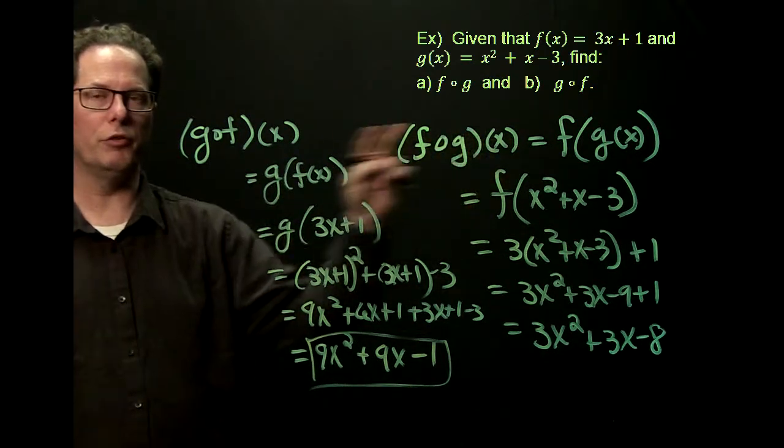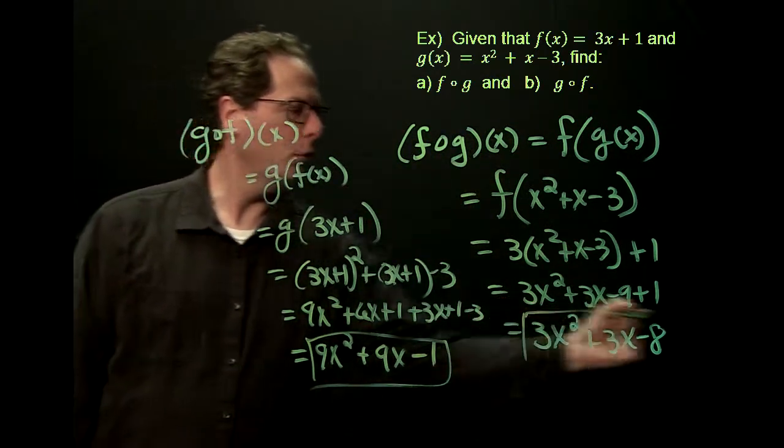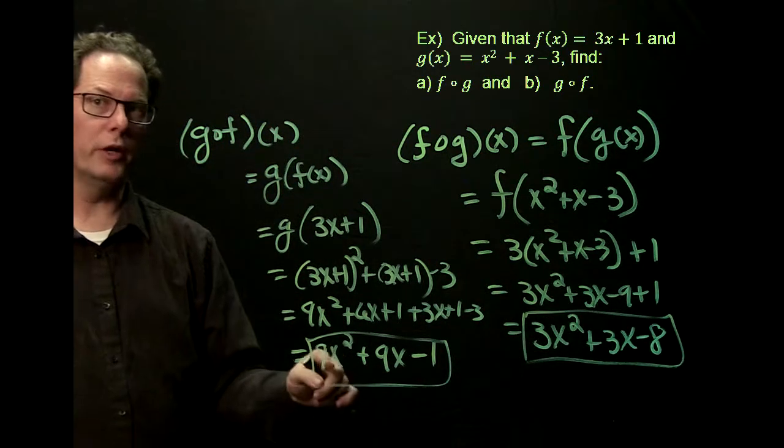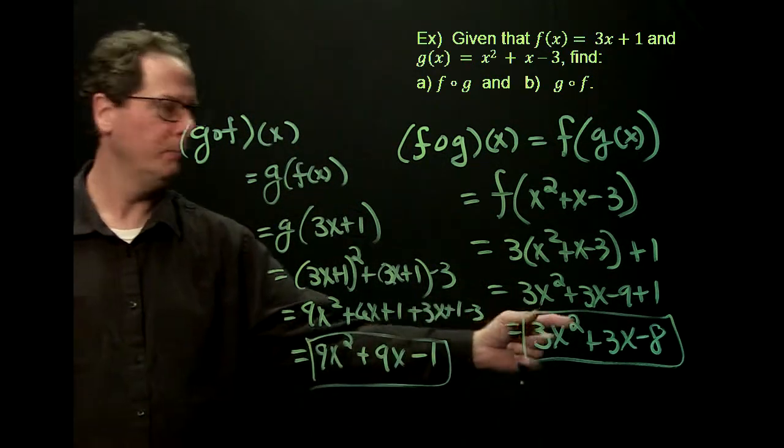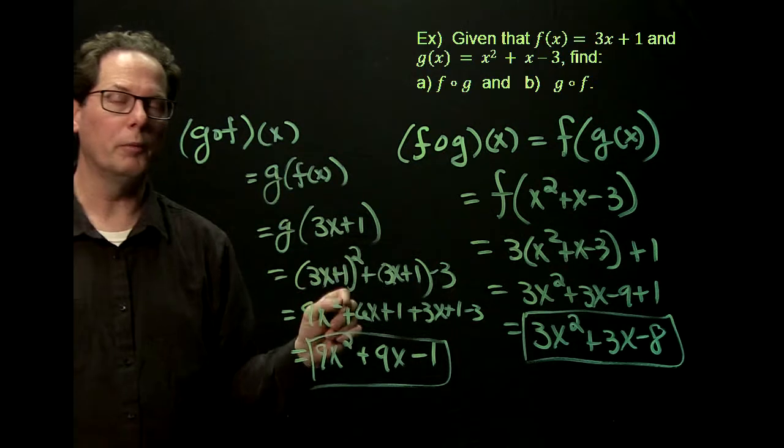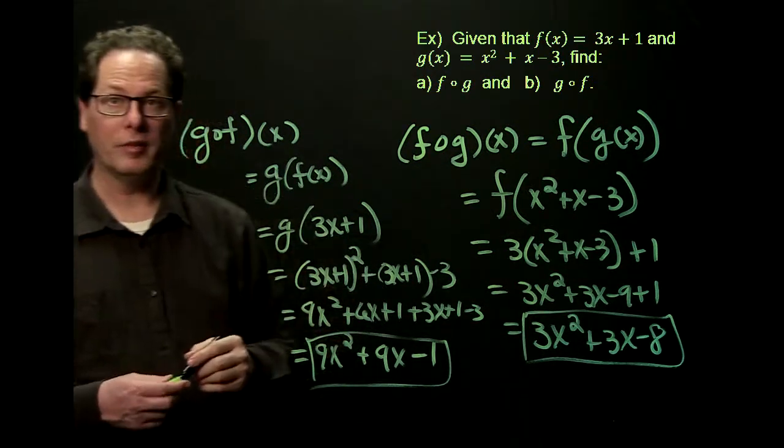So this would be the simplified version of our composition. So just see how f composed of g looks very different. So they're both quadratics, but this quadratic, 9x squared plus 9x minus 1, this quadratic, 3x squared plus 3x minus 8.